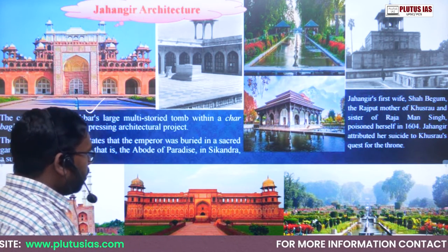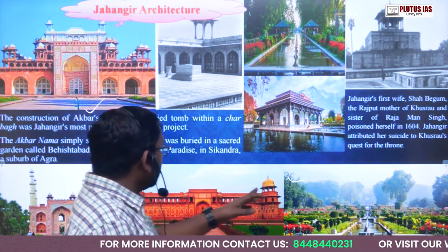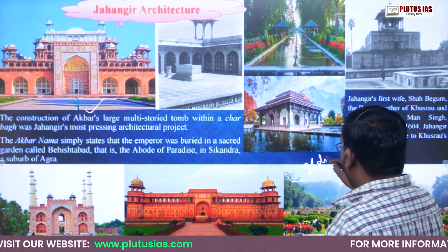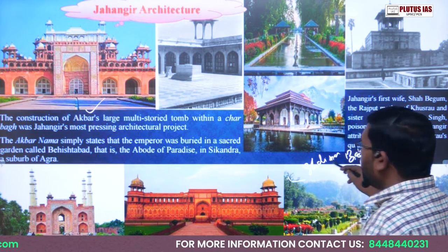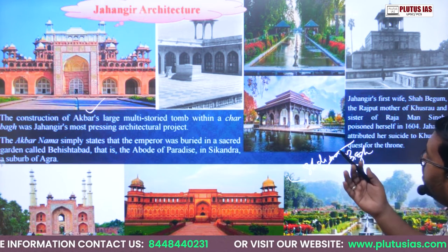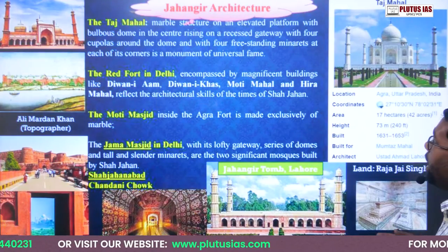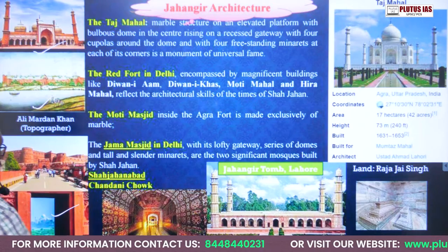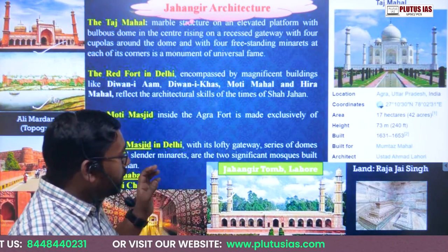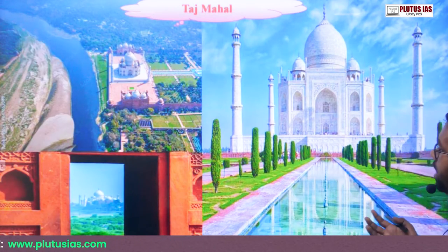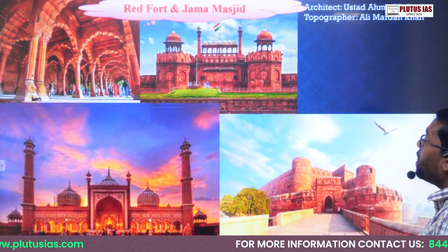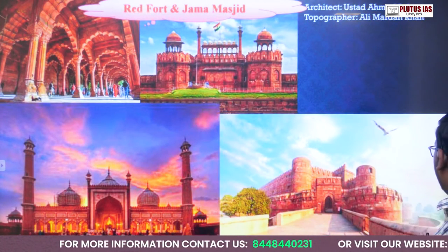The Akbar's Tomb was made by Jahangir. Then we have the very beautiful Shalimar Bagh situated in Jammu and Kashmir, also made by Jahangir. For Shah Jahan, the most important things include the Jama Masjid, Red Fort, Agra Fort, Taj Mahal, and Jahangir's Tomb in Lahore. These are beautiful pictures of the Taj Mahal — this view is from the Agra Fort. Red Fort and Jama Masjid are the other buildings made by Shah Jahan.